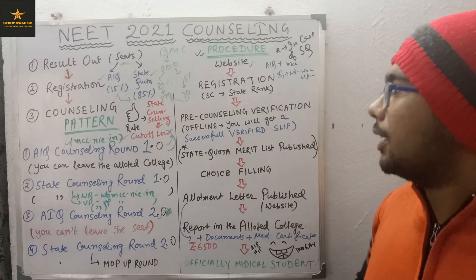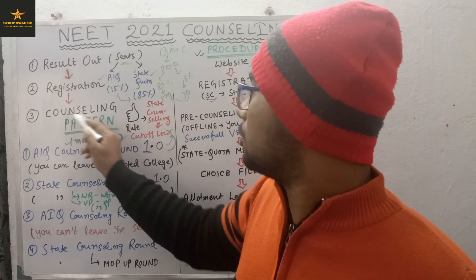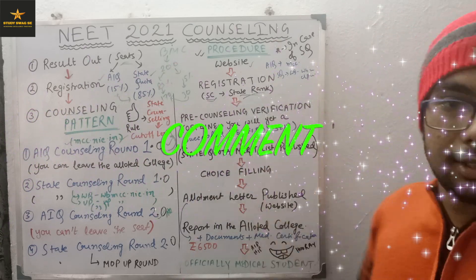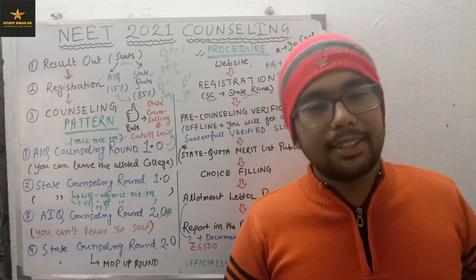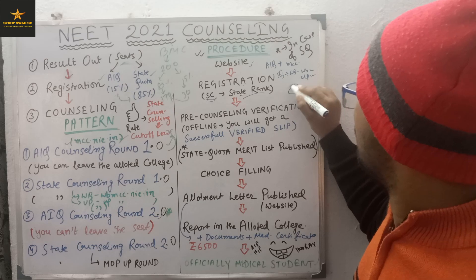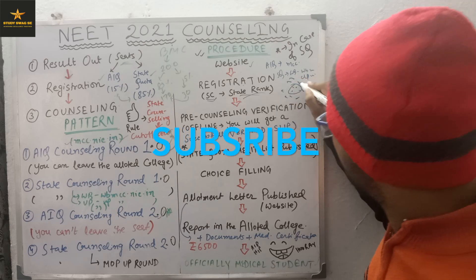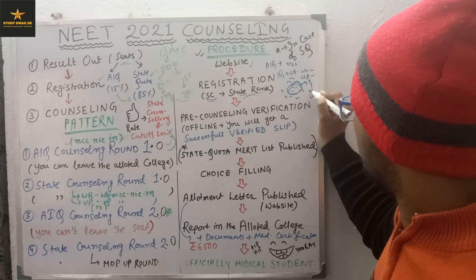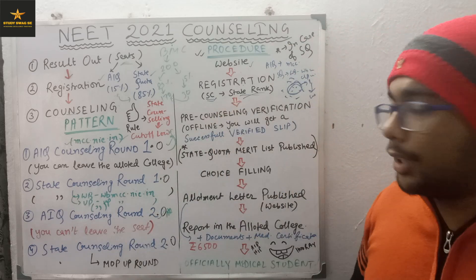Registration is done. Now for State counselling, you will be given a State Rank. For West Bengal it will be different, and for every state it will be different. For example, in West Bengal, among all the NEET toppers from the state, whoever ranks first and whoever ranks last — they will be given a State Rank. State rank will be published.